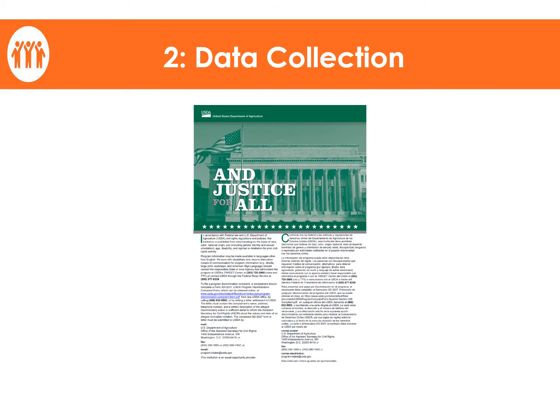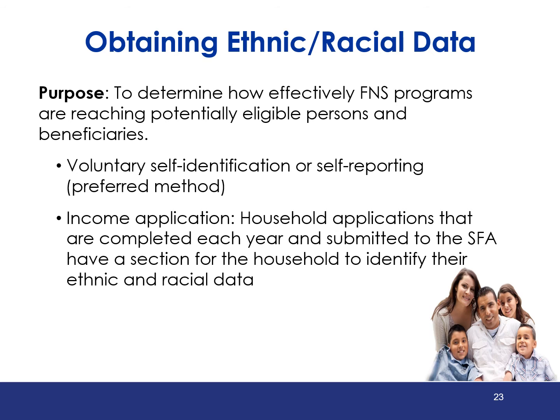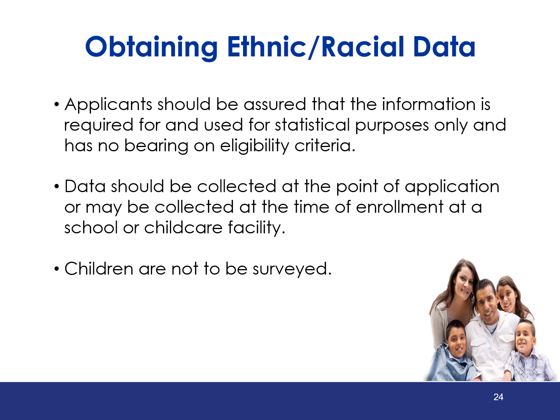Let's now discuss data collection. FNS headquarters and regional offices, state agencies, local agencies, and other subrecipients must provide for and maintain a system to collect ethnic and racial data in accordance with FNS policy. As a means of monitoring civil rights compliance, state agencies shall establish a system for the collection of racial and ethnic data of each person applying for and receiving benefits. The income application or household applications completed each year have a section for the household to identify their ethnic and racial data. Applicants should be assured that this information is required for and used solely for statistical purposes and has no bearing on benefit eligibility.